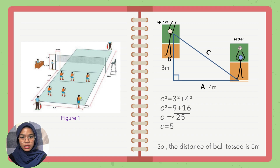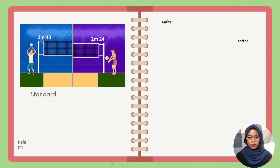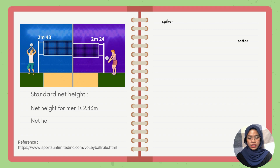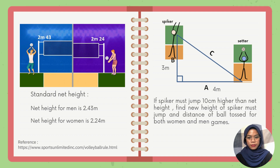When doing more research about volleyball, we found out that there is a difference in net height for women's and men's games. The standard net height for men is 2.43m and the standard net height for women is 2.24m. References are given below. So we calculated the estimated calculation to score a goal, and now we will find a new calculation with the new net sizes. The question is: if the spike must jump 10cm higher than the net height, find the new height the spike must jump and the distance of the ball toss for both women's and men's games.